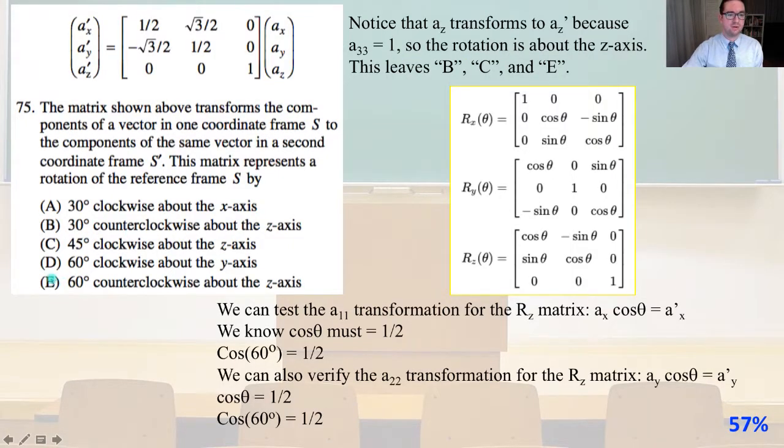75. The matrix shown above transforms the components of a vector in one coordinate frame S to the components of the same vector in the second coordinate frame S prime. This matrix represents a rotation of the reference frame S by. Notice that AZ transforms to AZ prime because A3,3 equals 1. And that is this one right here. So the rotation is about the Z axis. So this leaves B, C, and E.